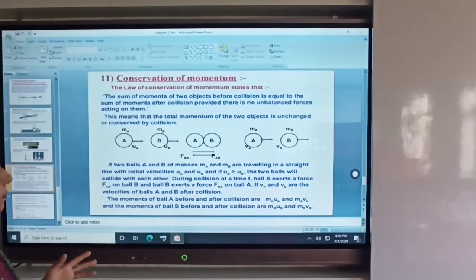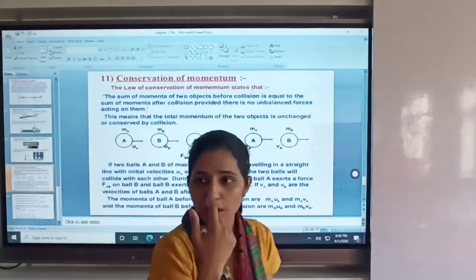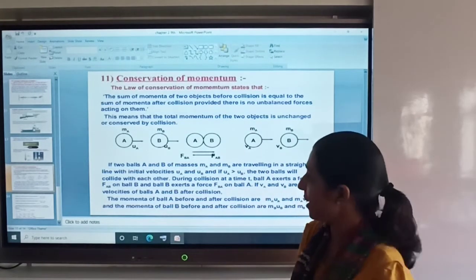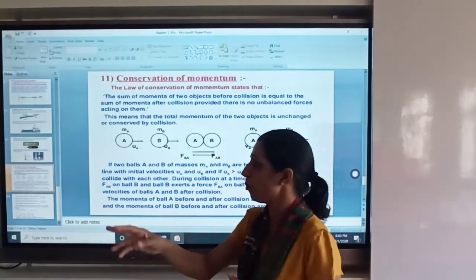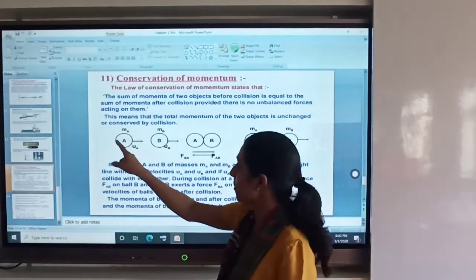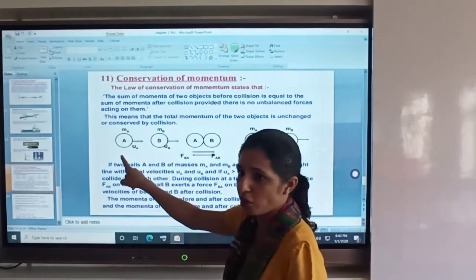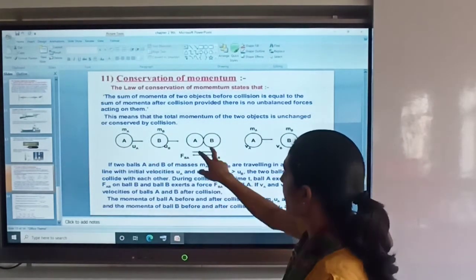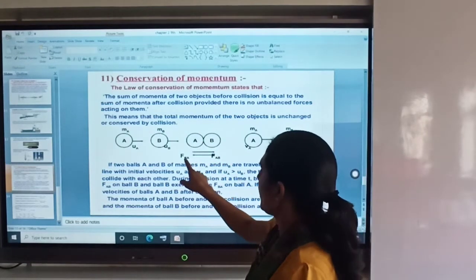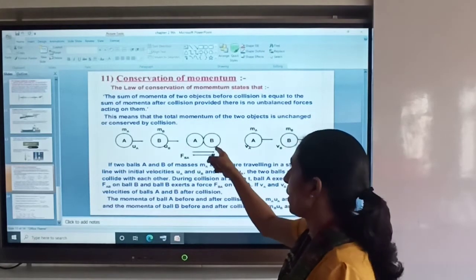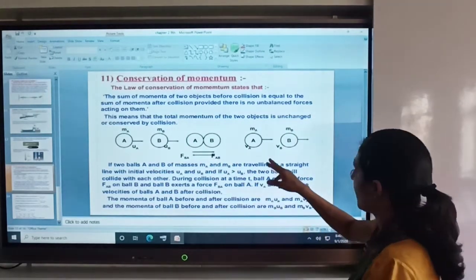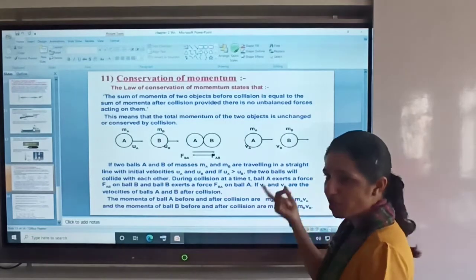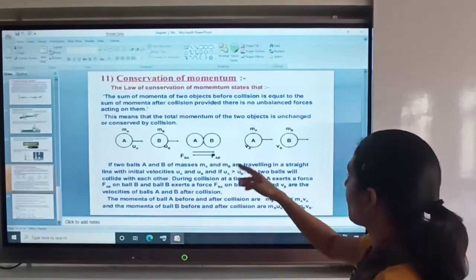This is the last concept, conservation of momentum. What is the meaning of conservation of momentum? We have two balls, A and B, with velocities V_A and V_B. These are the final velocities.